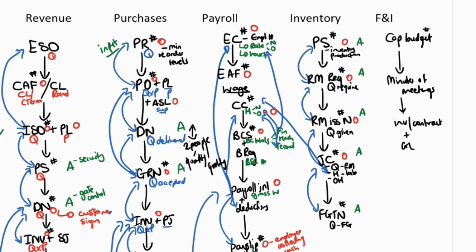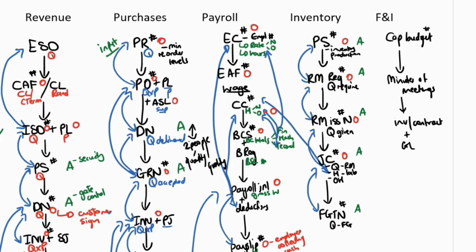It's not a large cycle — very limited documents and very limited controls because it doesn't happen often. It's not a recurring type of transaction. To mitigate risks, they get the directors involved: directors set the capital budgets, then authorize any new investments or financing in the minutes of their meetings. The contract or invoice then reflects the details of what was authorized in those minutes of meetings.